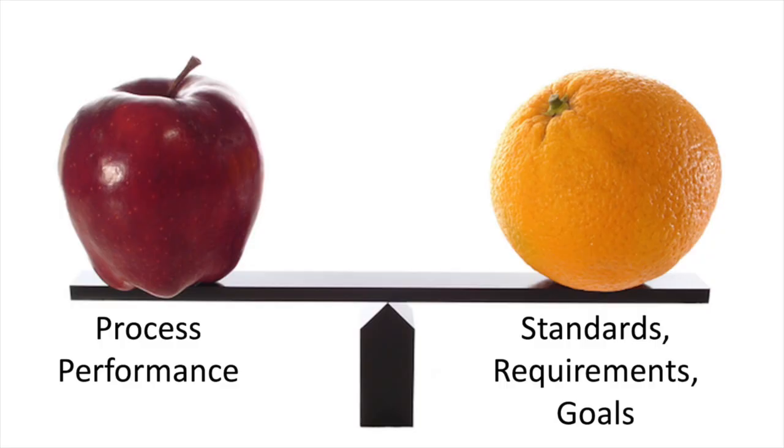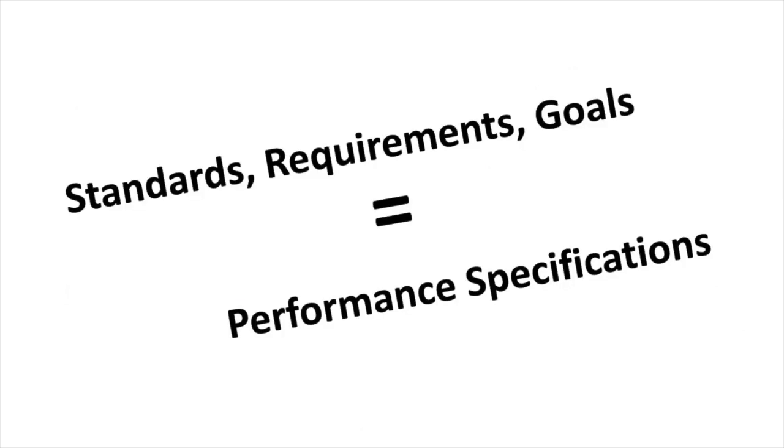Measuring process performance also lets us report on it, so that we can be transparent and accountable. This is especially important in emergency healthcare, where patients may have practical limits on making informed market choices when faced with a time-sensitive crisis. When we measure or report on process performance, it will often be compared to a performance standard, requirement, or goal — and generically, in process improvement terminology, these are called performance specifications.